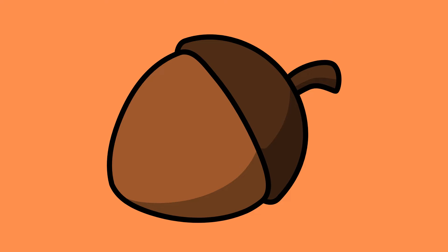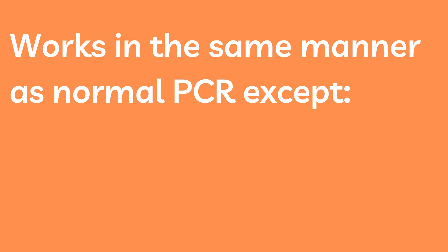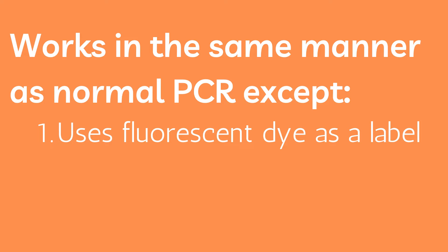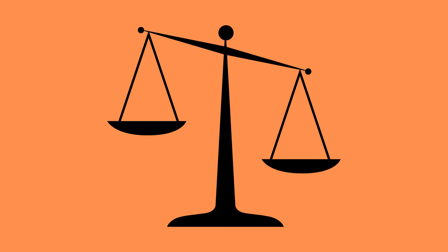In a nutshell, qPCR works exactly the same as normal PCR except it adds two additional elements. These are a fluorescent dye — something that can be tracked — and a fluorometer, a tracker. These two additional elements allow us to measure the DNA that we are amplifying as it is being amplified. To better understand this whole process, let us first take a look at how conventional PCR works.